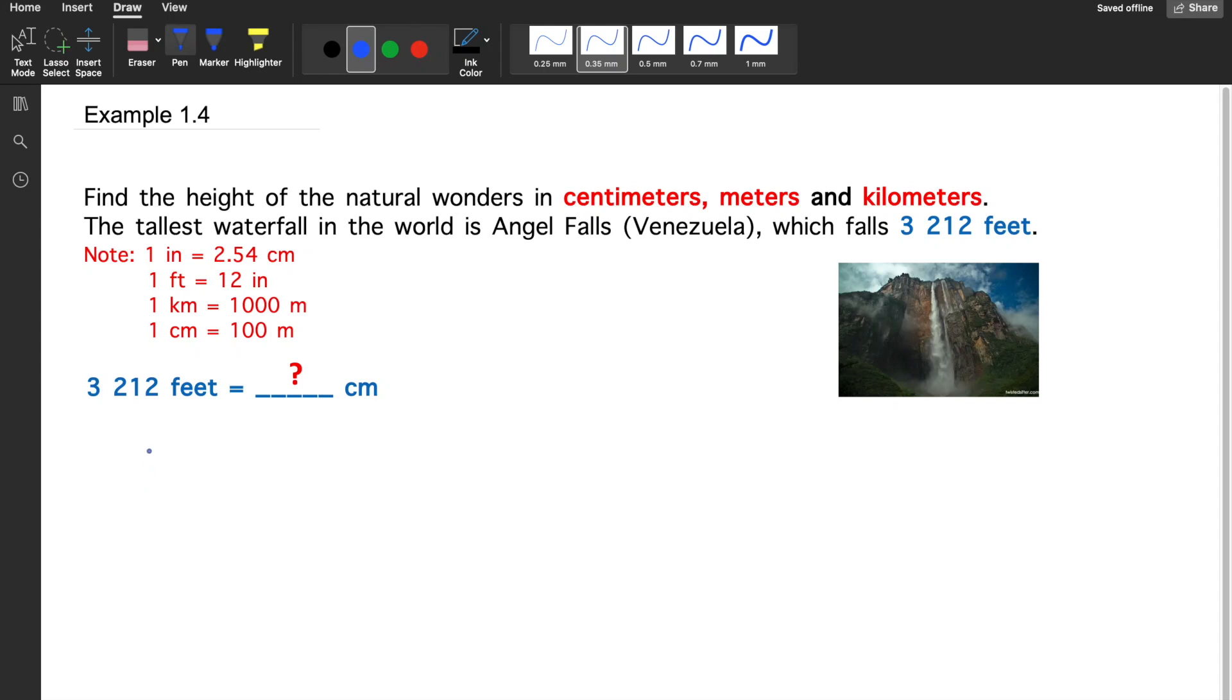Example number 1.4: Find the height of natural wonders in centimeters, meters, and kilometers. The tallest waterfall in the world is Angel Falls in Venezuela, which falls 3,212 feet. The problem goes like this: